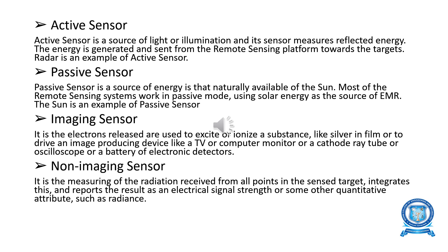Next, passive sensors. A passive sensor's source of energy is that naturally available from the sun. Most of the remote sensing systems work in passive modes using solar energy as a source of electromagnetic radiation. The sun is the best example for passive sensors. The instruments used in passive sensors are spectrometer, radiometer, spectroradiometers, hyperspectral radiometers, imaging radiometers, and accelerometers.